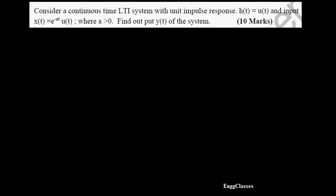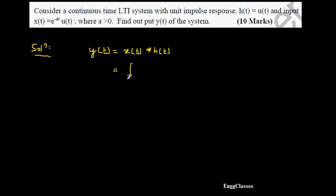Welcome to NG Classes YouTube channel for a video lecture series on signals and systems. In this video lecture, we will consider a continuous time LTI system with impulse response h(t) = u(t), and input x(t) = e^(-at)u(t) where a > 0. We need to find the output y(t), which is nothing but the convolution integral: y(t) = x(t) convolved with h(t), expressed as the integral from minus infinity to infinity of x(τ)h(t−τ)dτ.